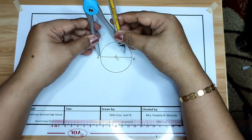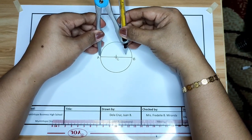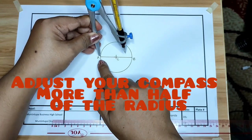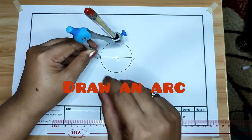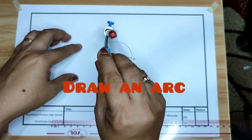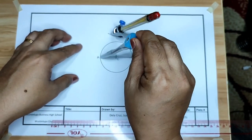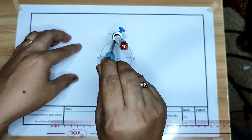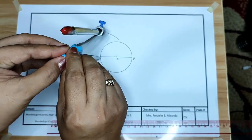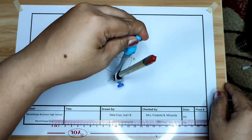This is now more than half. Then draw an arc on the upper portion and on the lower portion. Adjust your compass more than half of the radius, then draw an arc on the upper portion, then on the lower portion of your drawing paper.